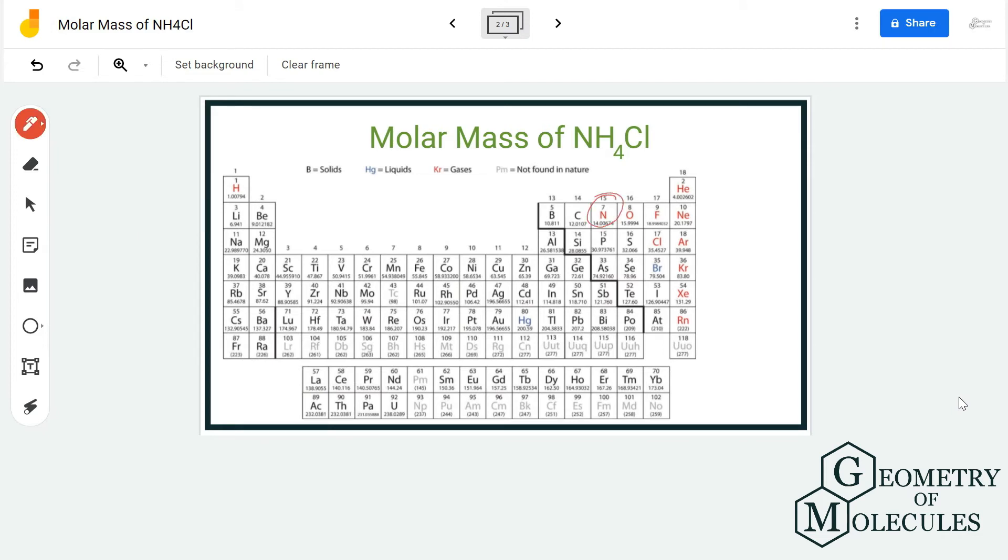In which the moles of all atoms are specified. So nitrogen has 14.01 grams per mole—I'm not going to write units every time—and for hydrogen it is 1.01, but as there are four atoms over here, we are going to multiply this number by four.